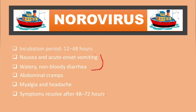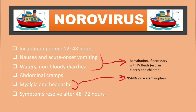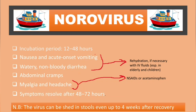Because of vomiting and diarrhea, the patient will be dehydrated, so the first step is rehydration — with IV fluids if necessary, especially in elderly patients and children. If the patient has myalgia and headache, we usually give NSAIDs or acetaminophen.